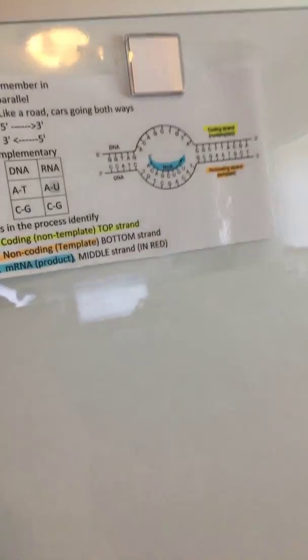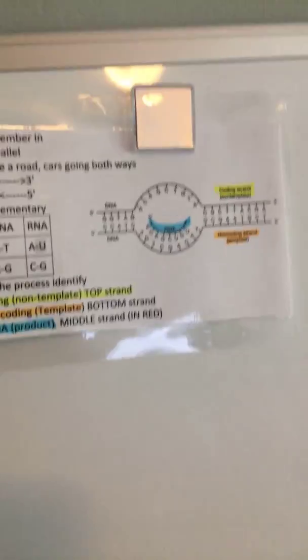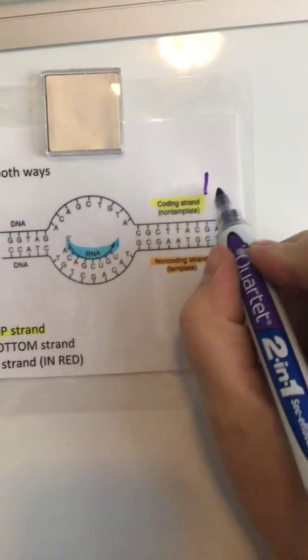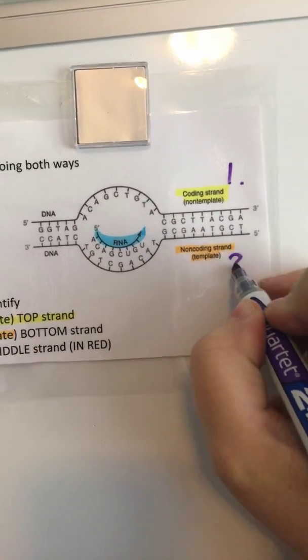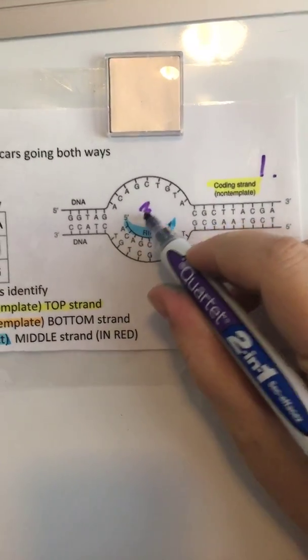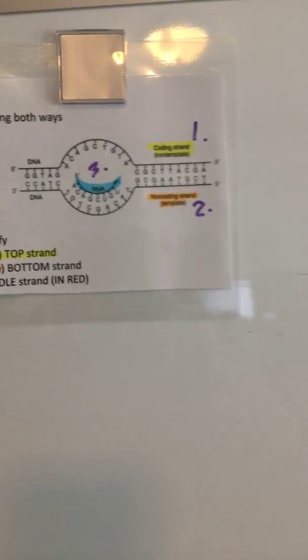The first step is coding, second step is non-coding or template, third step is our messenger RNA. This would be step one which is your coding, step two your non-coding, and step three which is your messenger RNA.